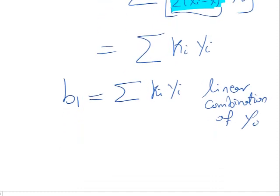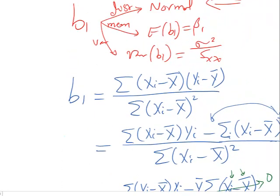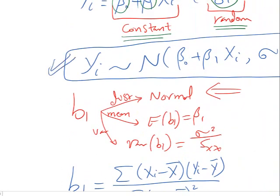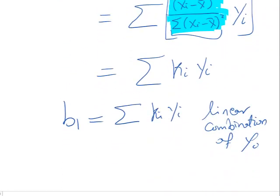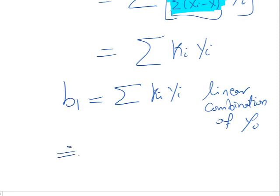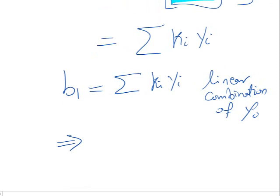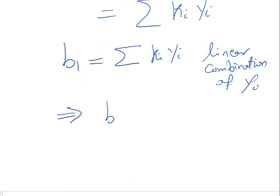Because εᵢ is normally distributed and yᵢ is the sum of a constant term with εᵢ, yᵢ is normally distributed. Since b₁ is a linear combination of yᵢ, and a linear combination of normal random variables is also normal, b₁ has a normal distribution. This completes the first result.